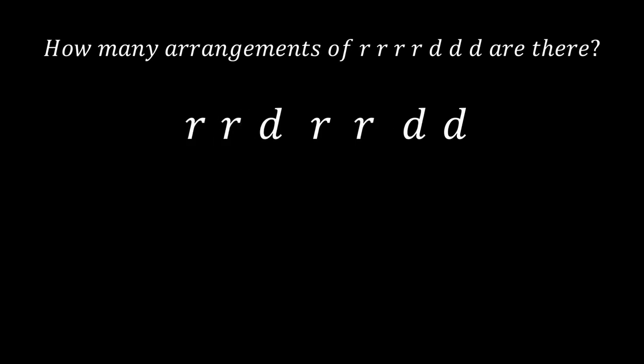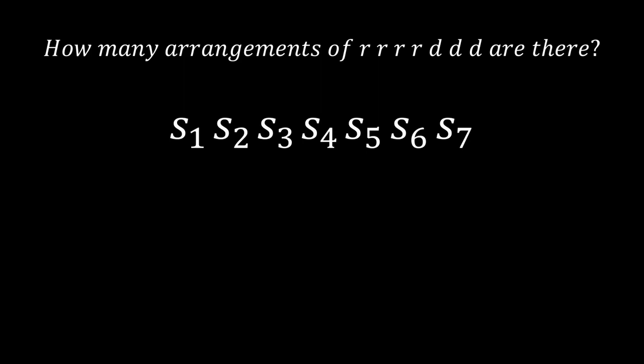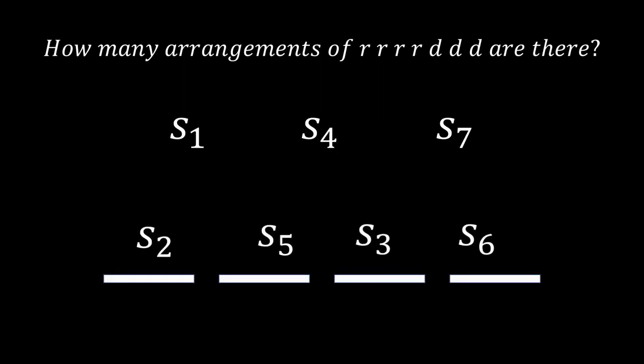To solve this problem, let's say that we start with 7 steps not labelled right or down yet. We must choose 4 out of 7 steps to be a right step. For example, these steps here, 2, 5, 3, 6. And we must let the other steps be a down step.